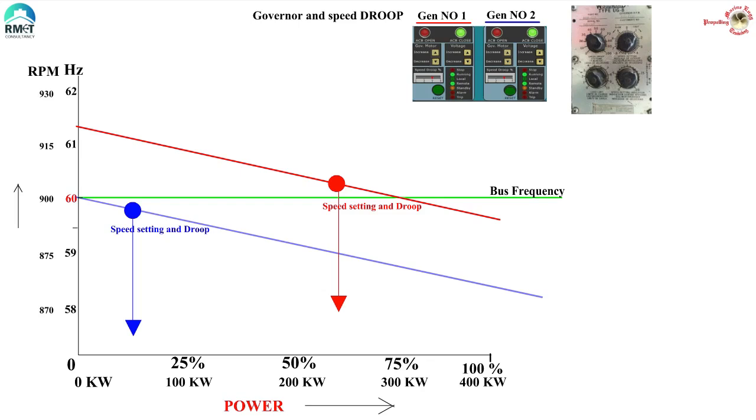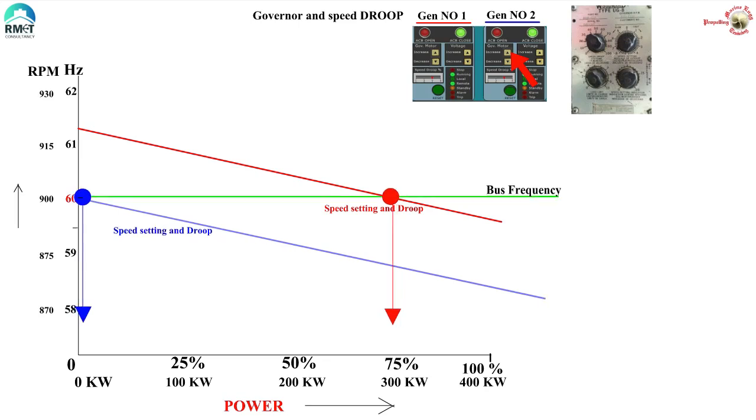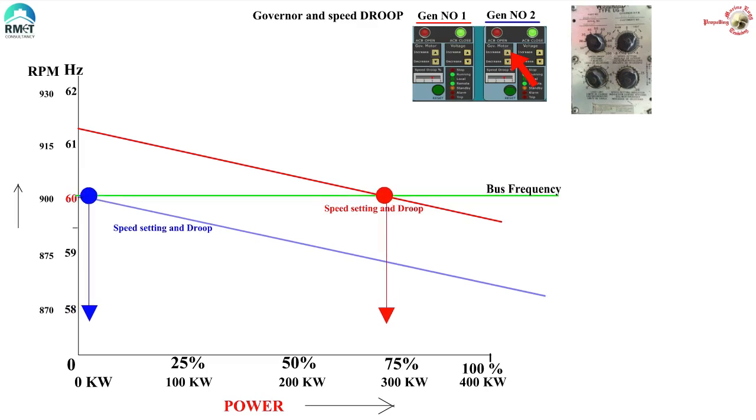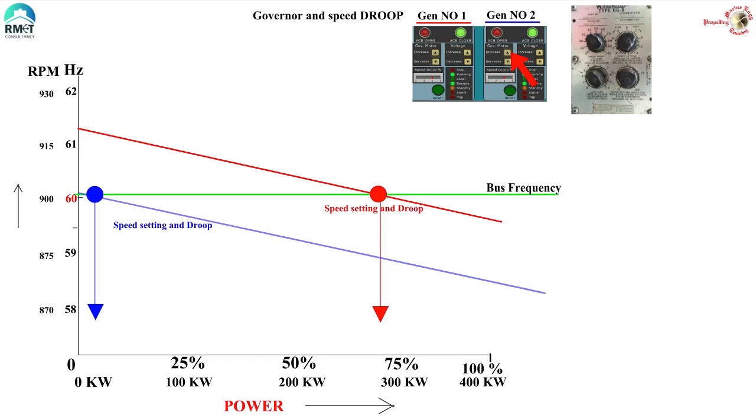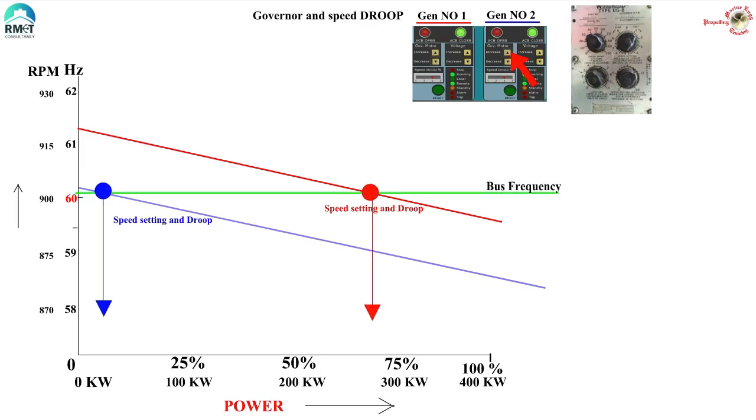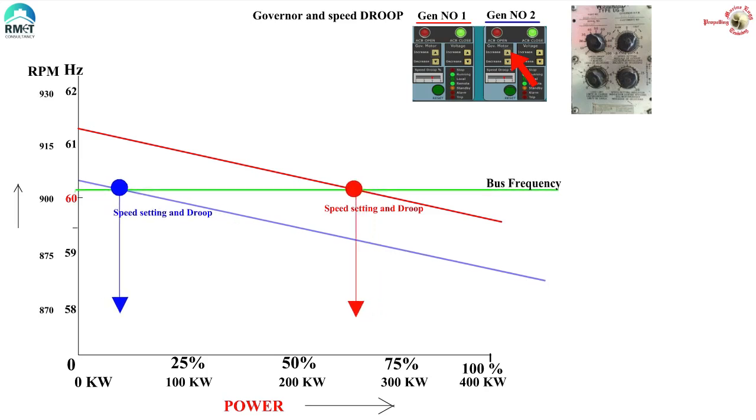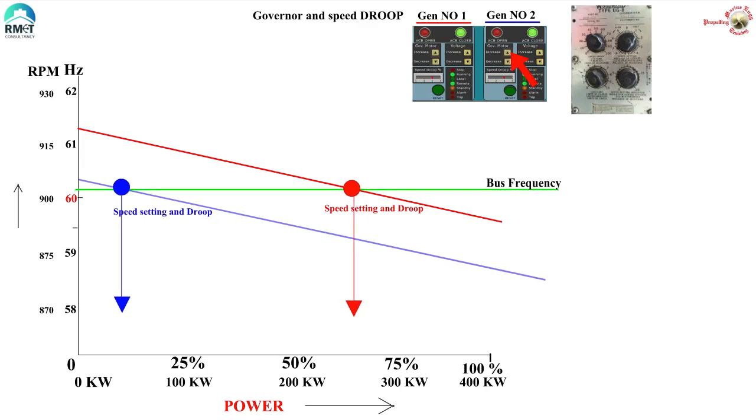We can see that if number one generator reduces its load, its frequency has to increase. No choice. So what exactly happens when we transfer load? Let's start all over again. Number one generator is now at 300 kilowatt, 60 hertz. Number two generator is at zero kilowatt, 60 hertz. You all know that to put load on number two generator, we press the speed setting knob. Once you start pressing this, the load starts increasing. But you will soon understand why we press the speed setting knob. What has the speed setting knob got to do with load shifting? Let us press the knob for number two generator, that is increase the speed setting of number two generator, and see what happens.